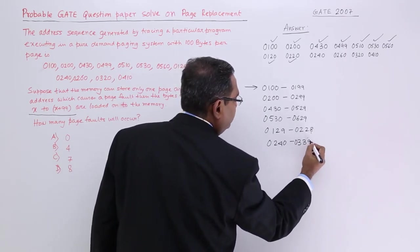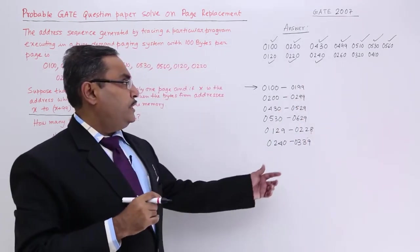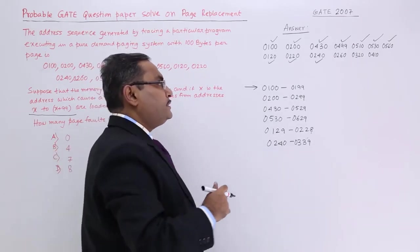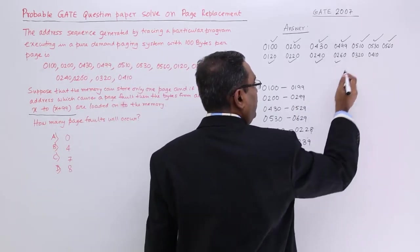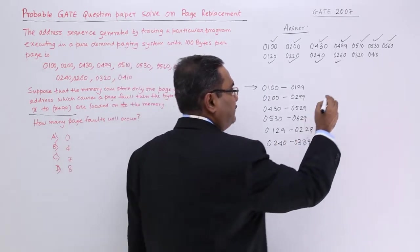240 plus this, so 340, 339. It has been considered. Now, 260 is falling in this range. 260 is falling in this range. Now, 320, 320 is again falling in this range. So it is page hit. It is not page fault.